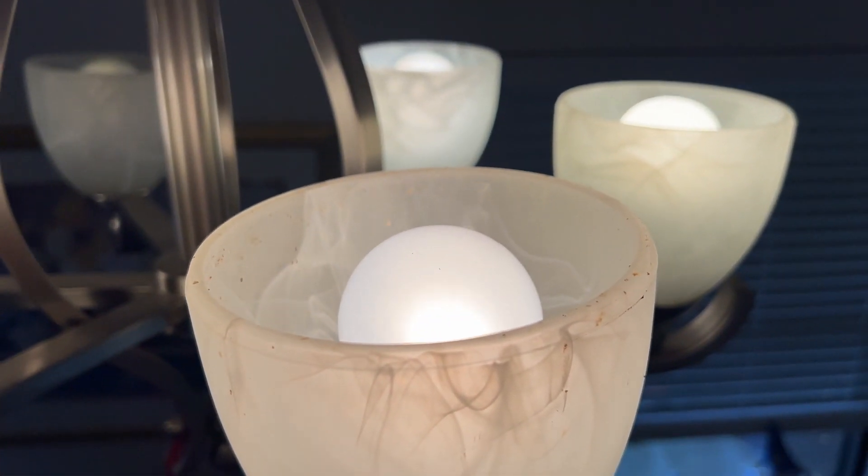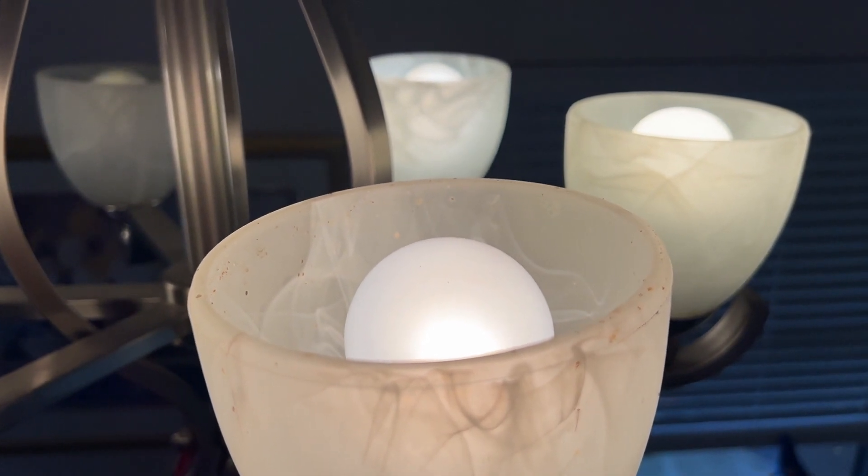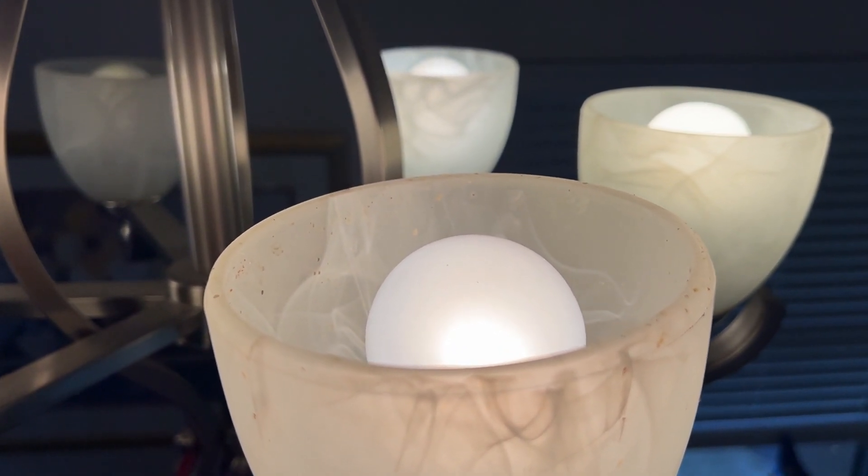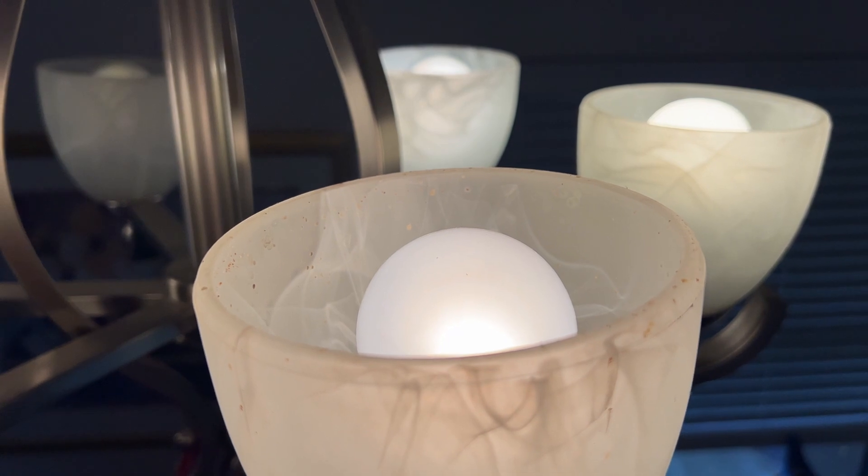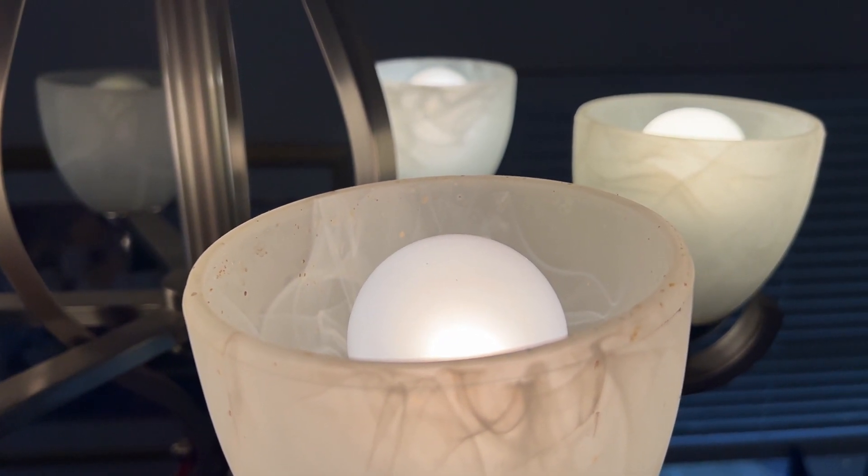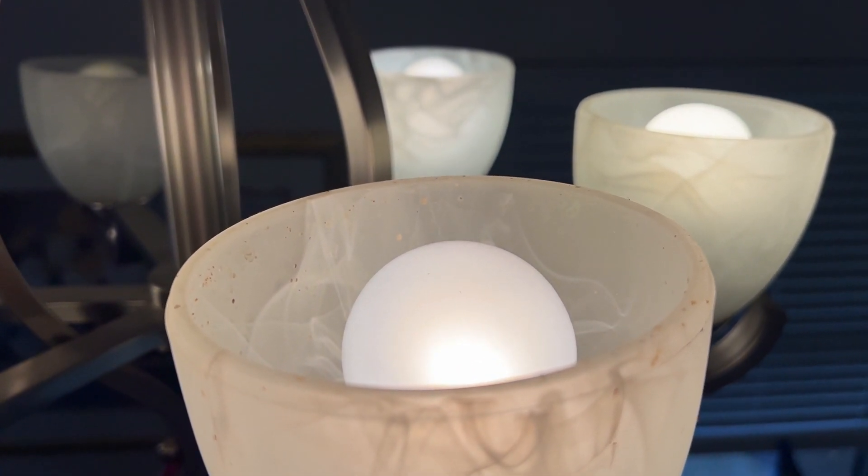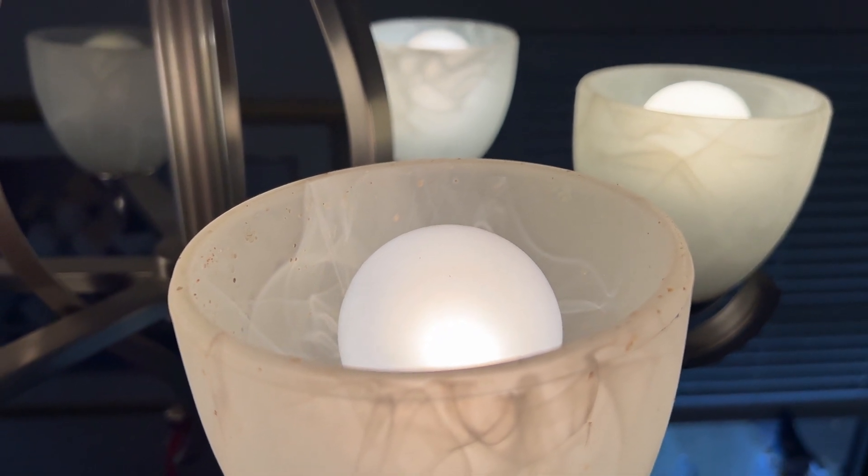A couple other things to keep in mind when replacing a 100 watt incandescent. Make sure you're getting an LED that has the same A19 or E26 base. That's basically the standard screw base that would go into any light fixture.